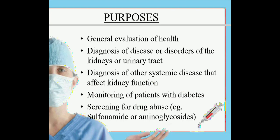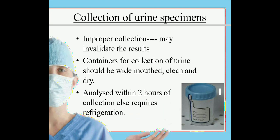What are the purposes of urine analysis? First is general evaluation of health. Second is diagnosis of disease or disorders of the kidneys or urinary tract. Third is diagnosis of other systemic diseases that affect kidney function. Fourth is monitoring of patients with diabetes to rule out any sugar in urine. Fifth is screening for drug abuse, for example sulfonamide or aminoglycosides.